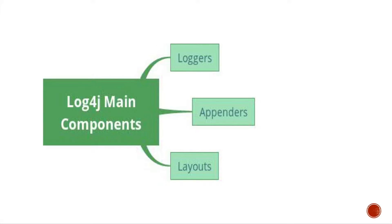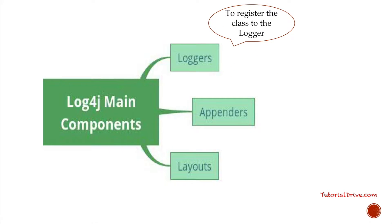Let's see what are the main components in log4j. The first one is loggers. When you're writing a program and you have written a class file, in order to capture the logging information about that particular class file, you'll be using something called loggers. Loggers are responsible for capturing the logging information of the class file you're working on. You would call logger.getLogger and mention the class name for which you want the logging information.